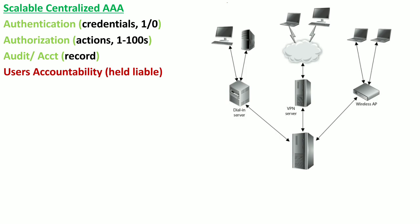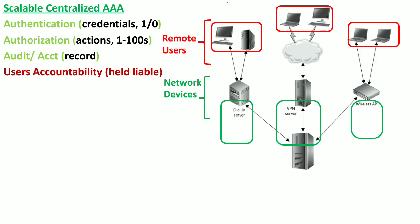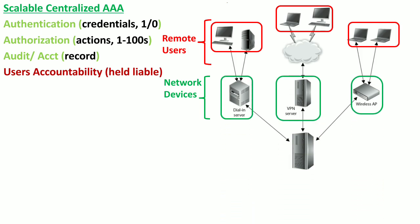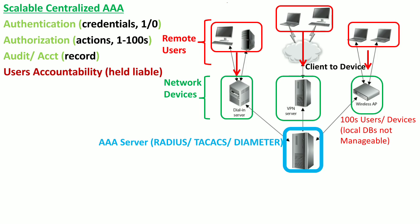I will explain the general architecture of these AAA services. There are numbers of remote users who want to access network devices or network resources. These network resources can be a VPN server, dial-in server, or a wireless access point. This is the AAA server which can be a RADIUS server, TACACS, or Diameter.